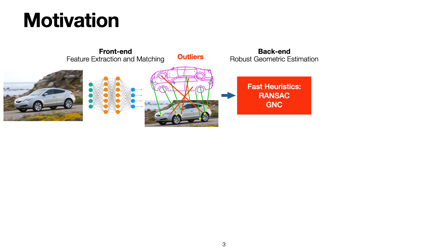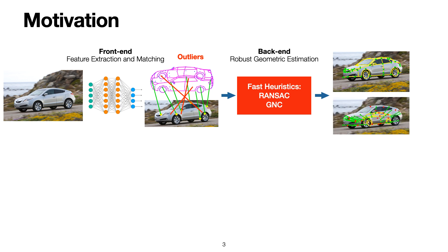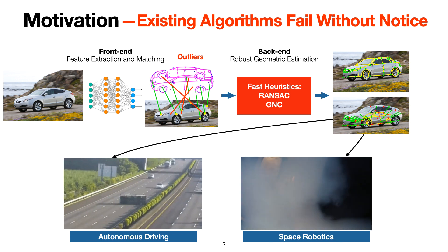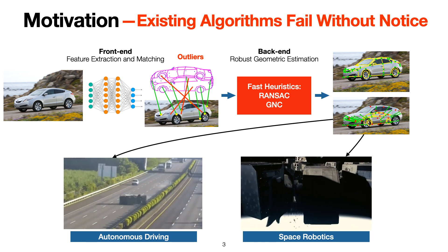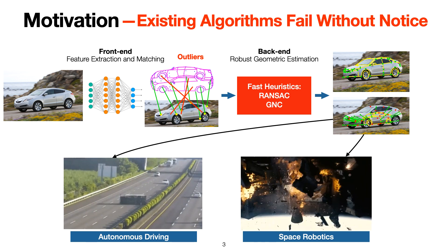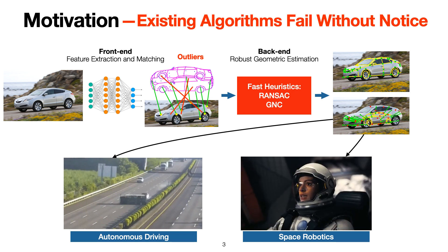Therefore, the backend performs robust estimation based on fast heuristics such as RANSAC and GNC. These heuristics oftentimes give reasonable estimates, but if there are many outliers, they fail. Moreover, when they fail, they do not give any notice to the system. Hence, if not handled carefully, this leads to catastrophic damages to both machines and human life.